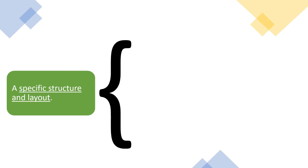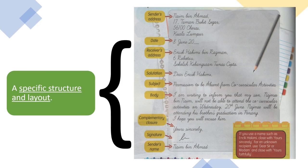Next, a specific structure and layout. When you write a formal letter, it must be structured and laid out as stated. It must have: sender address, date, receiver address, salutation, subject, body, complementary closure, signature, and sender's name. This must follow the proper manner — you cannot change it to a different form, otherwise it cannot be a formal letter. Remember, a formal letter must be written in a structured form like this.